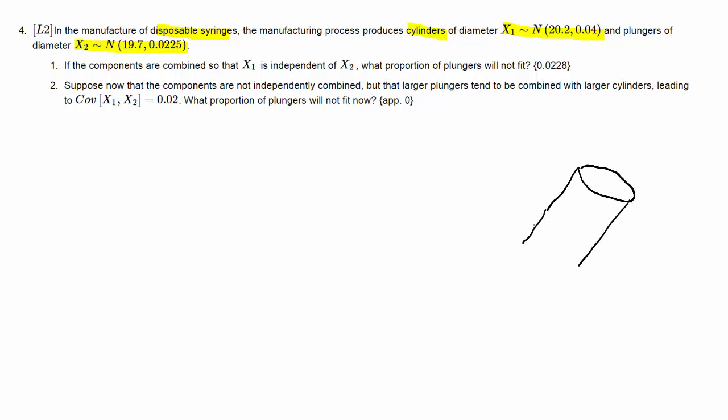To understand the problem, let's just illustrate. So here we have the syringe, the tube, or the cylinder, and what we need in there is some sort of plunger that pushes into that cylinder to push out whatever is in the syringe.